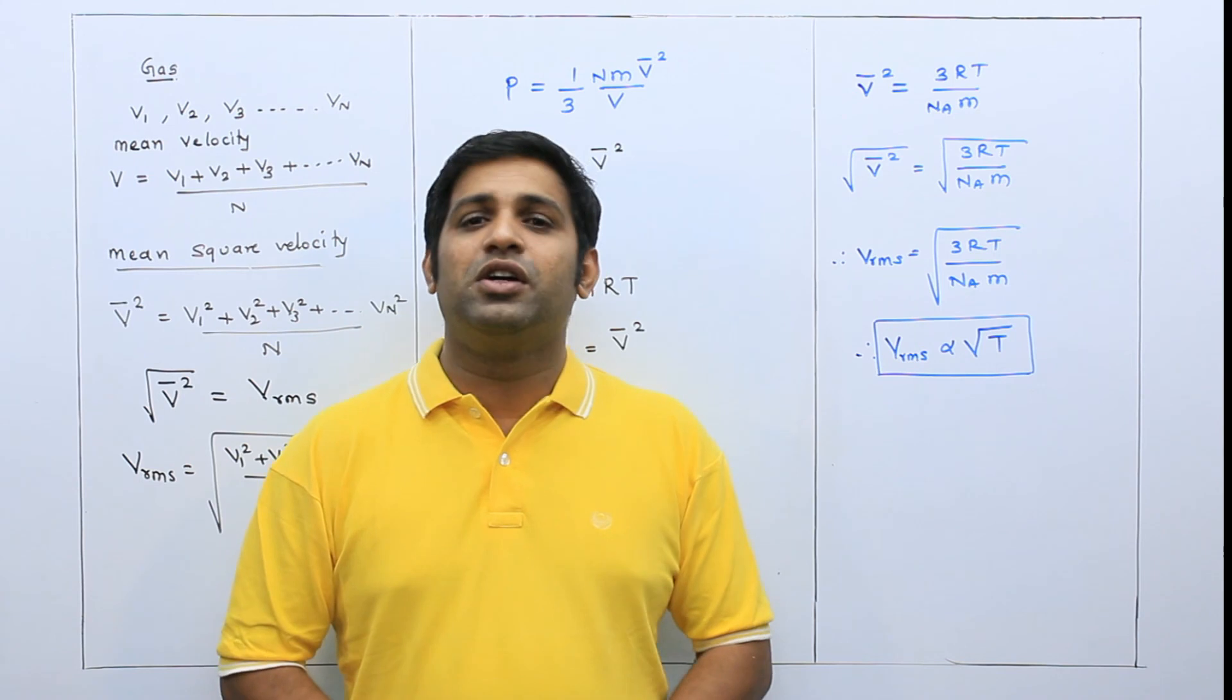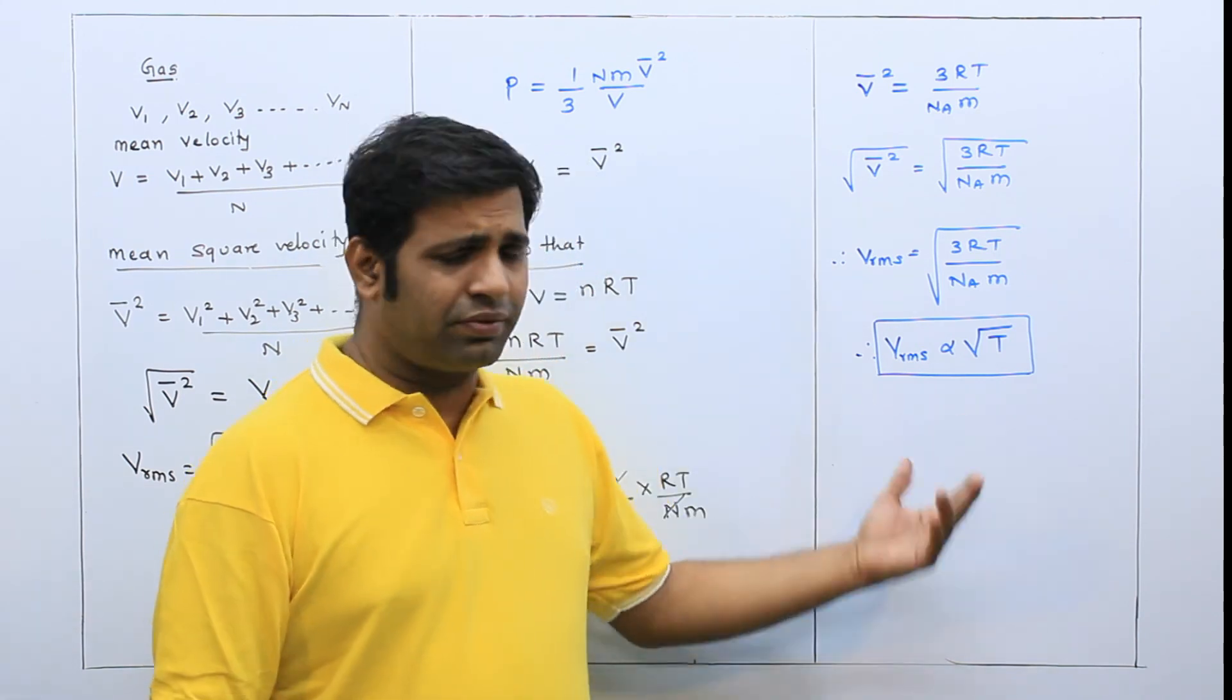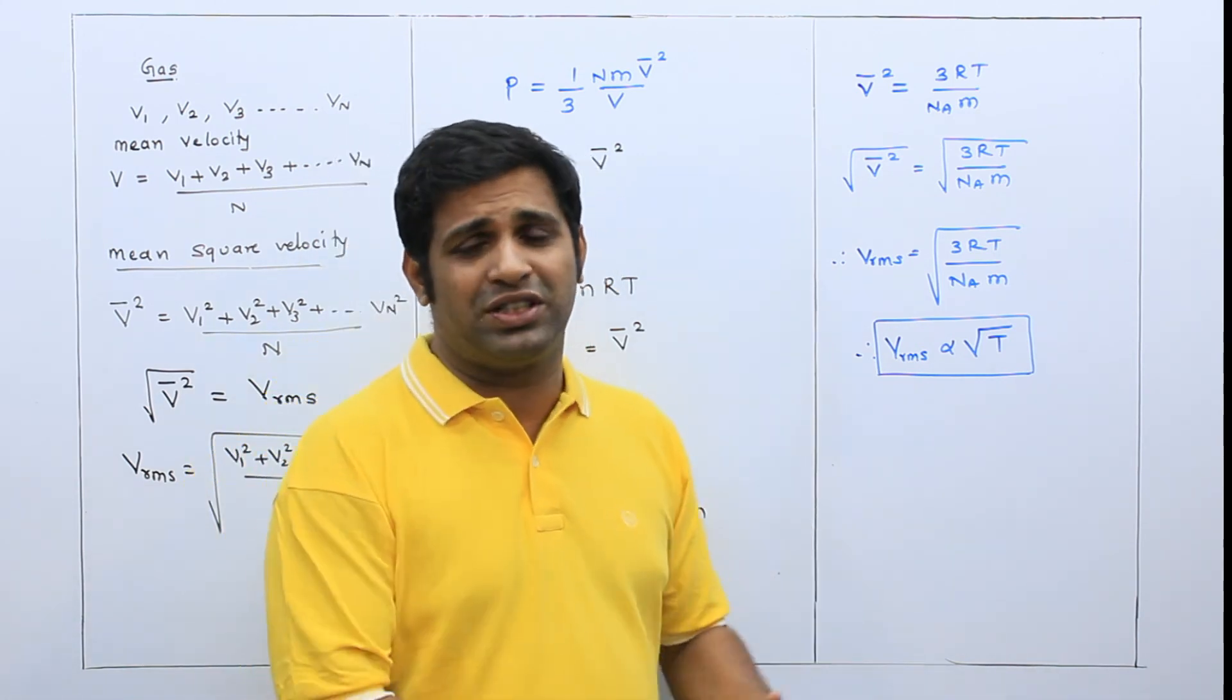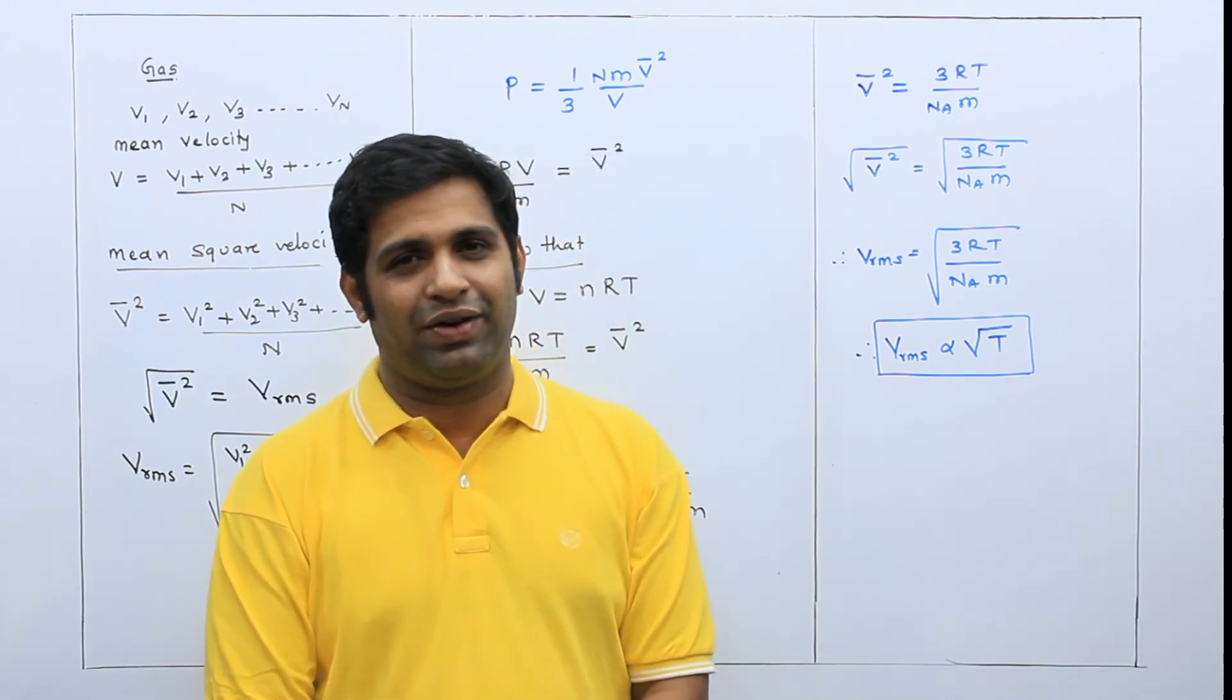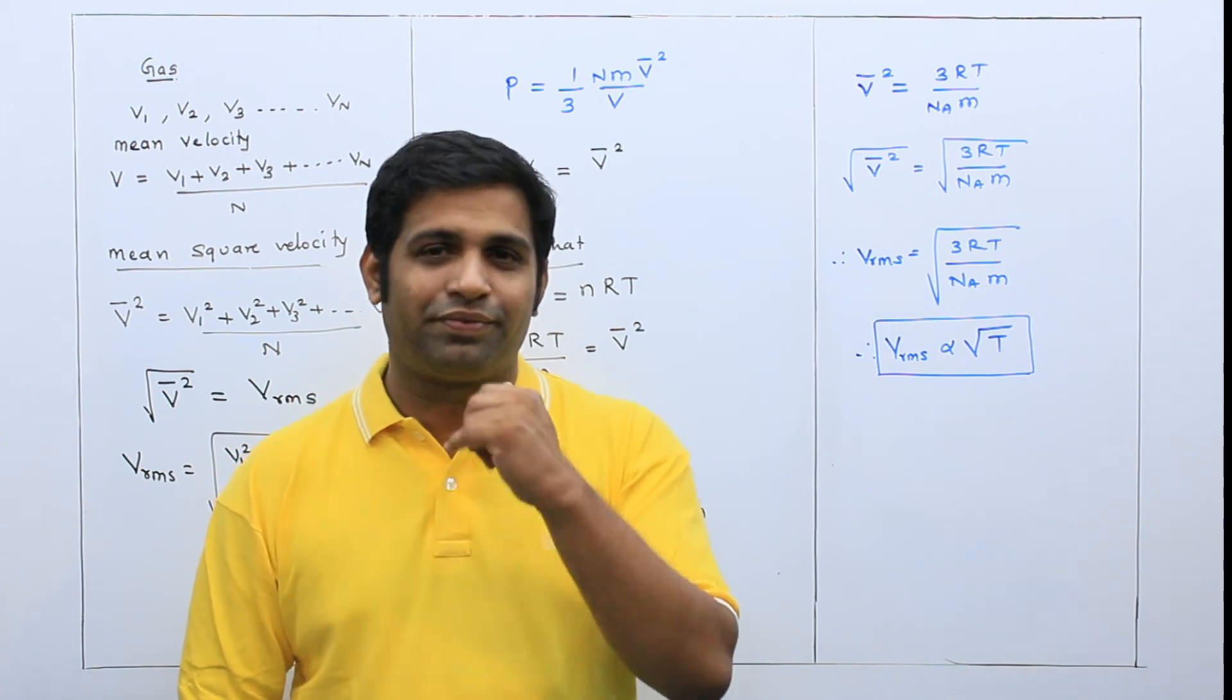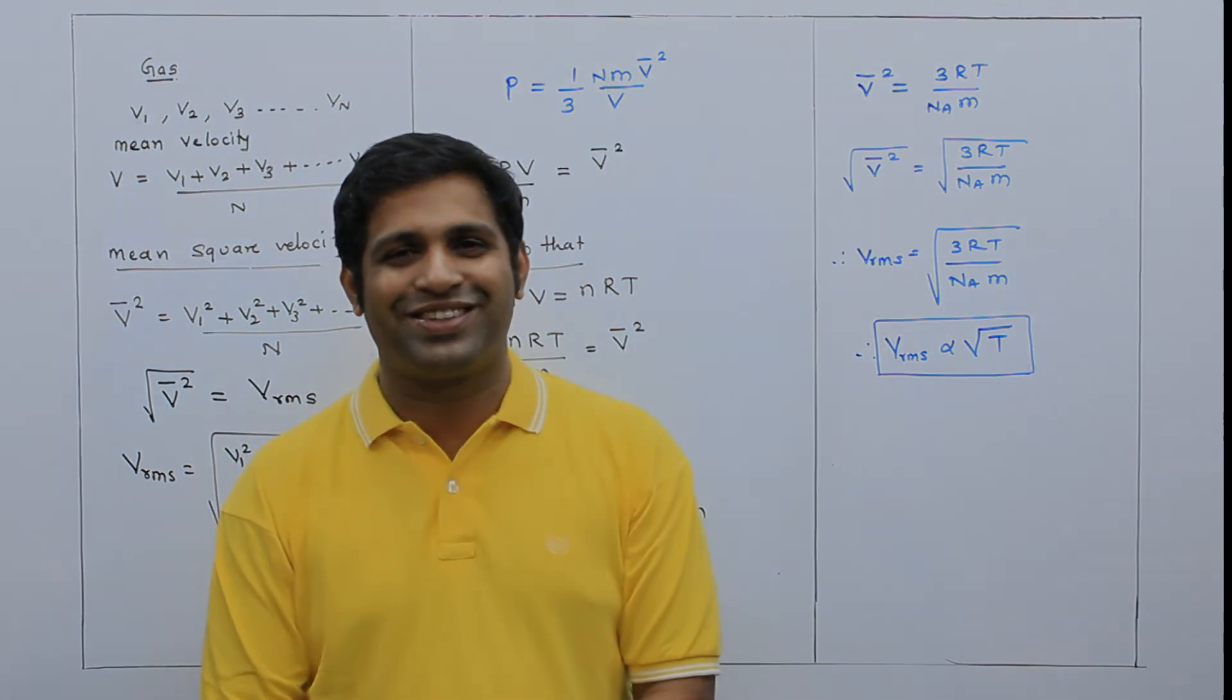Remember, temperature will increase, RMS speed will increase. So what will happen? Kinetic energy will increase, speed will increase. So this is the very simple concept where we have derived the formula for RMS velocity. It is root of 3RT upon NA into smaller M. Is it clear? So I think you have noted down. Do this, it's good practice. Thank you very much.